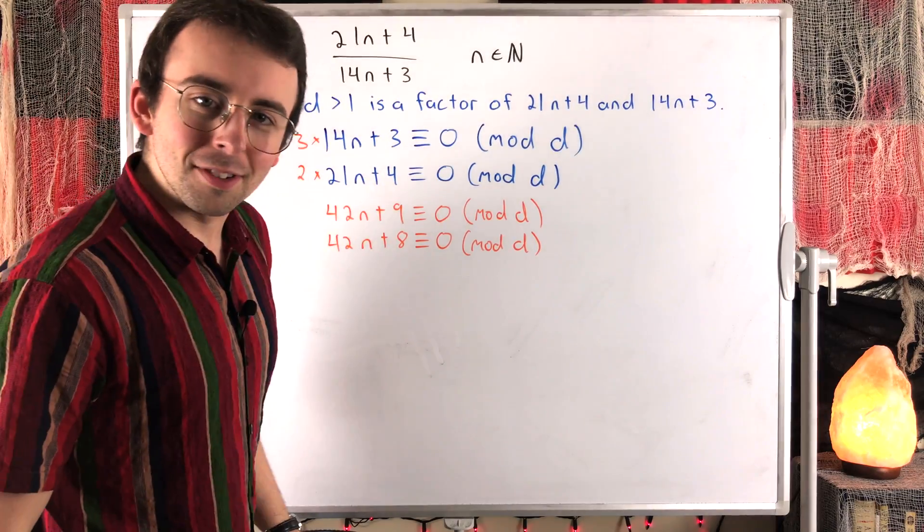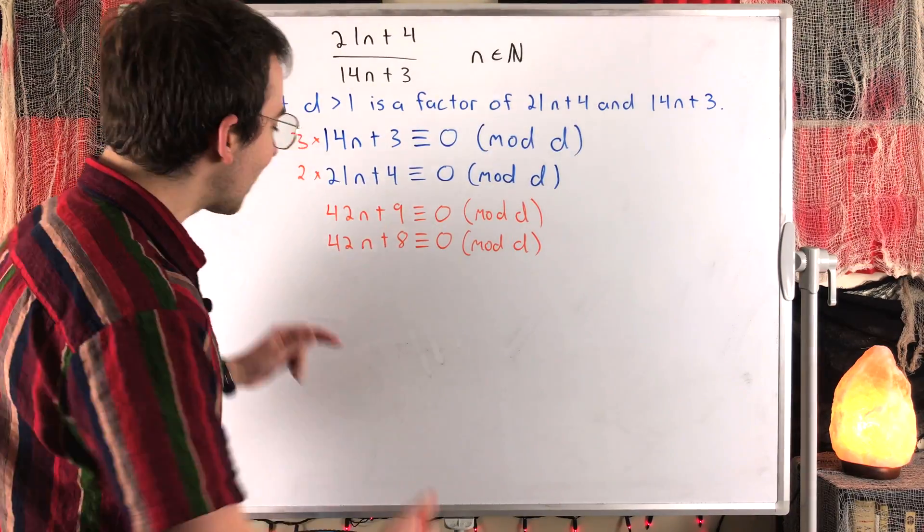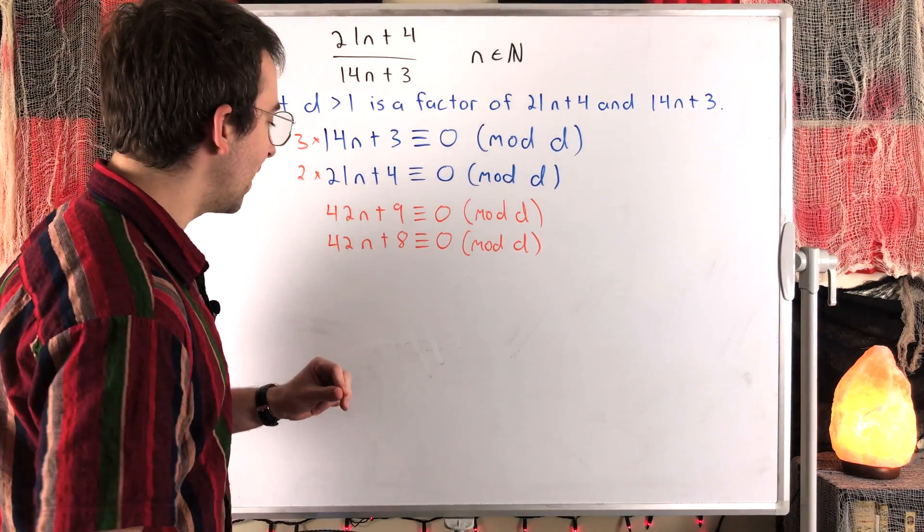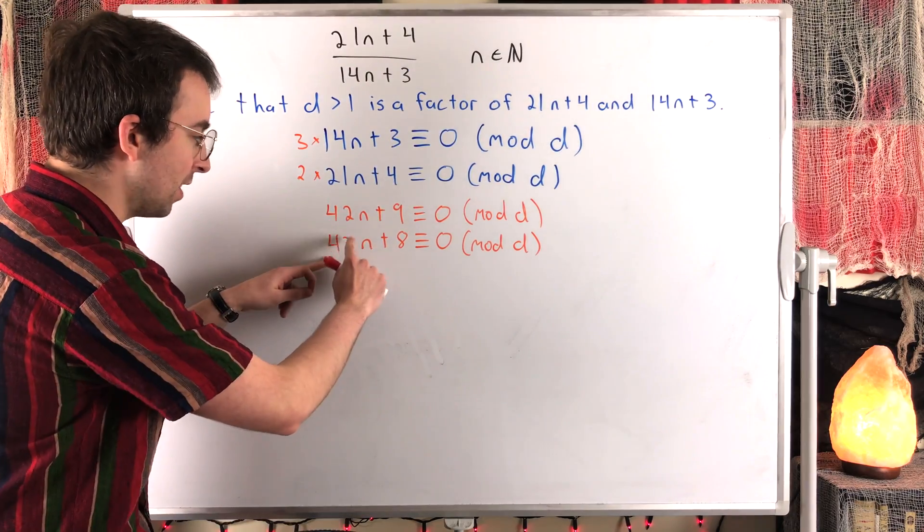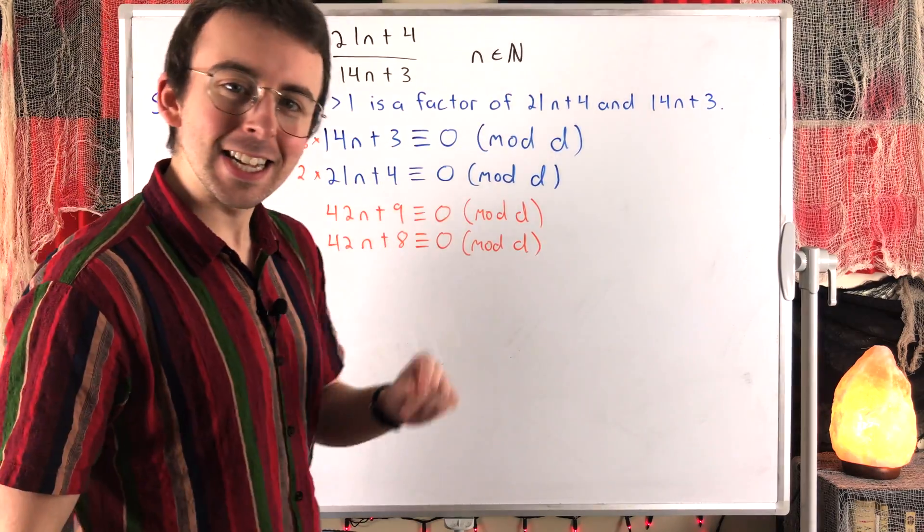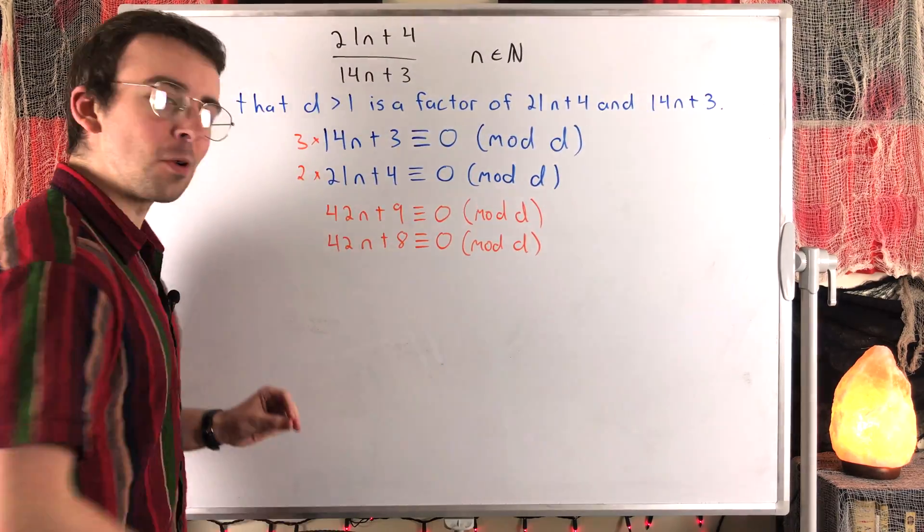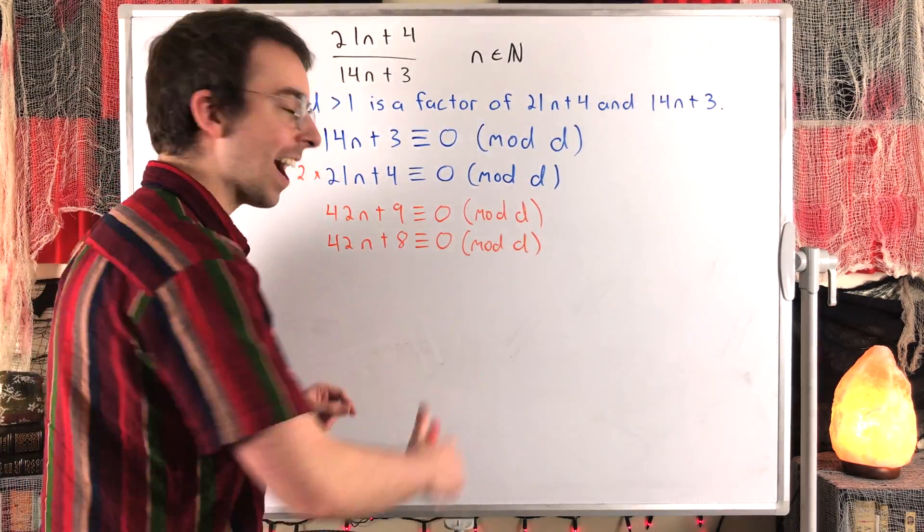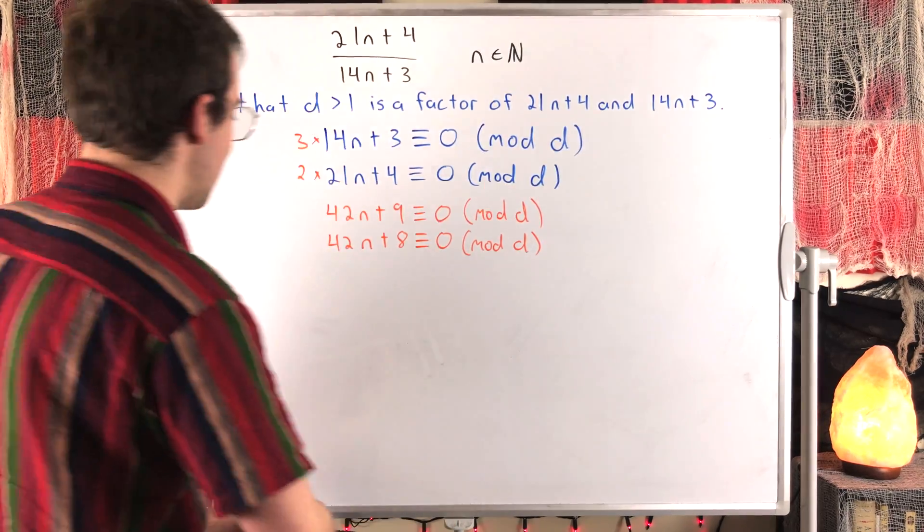Now perhaps you see there's a problem. So now we've got that 42n plus 9 and 1 less than 42n plus 9, 42n plus 8, are both congruent to 0 mod D. That seems wrong, but let's just do a little bit more work to really isolate the contradiction that we see here.